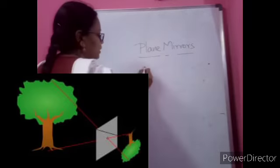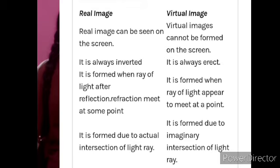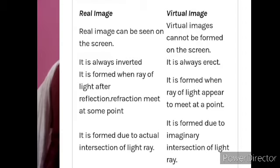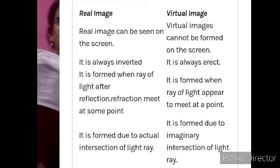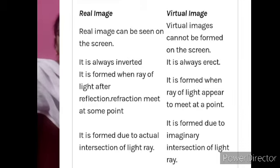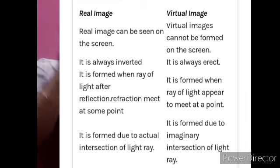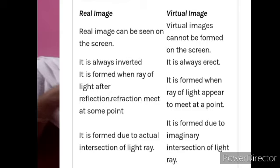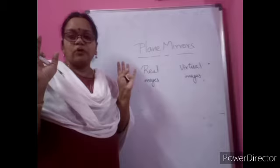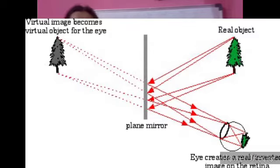Images are of two types: real images and virtual images. Before learning about the image formed on the plane mirror, let us know the basic differences between them. Real images are formed by the actual intersection of reflected rays. As we discussed in the previous class, light from the source falls on the highly polished surface; reflected rays actually intersect at a point and the image is formed there. The image you see in the plane mirror is a virtual image.